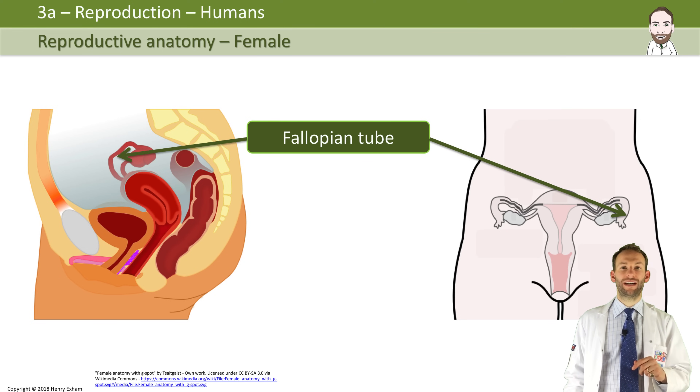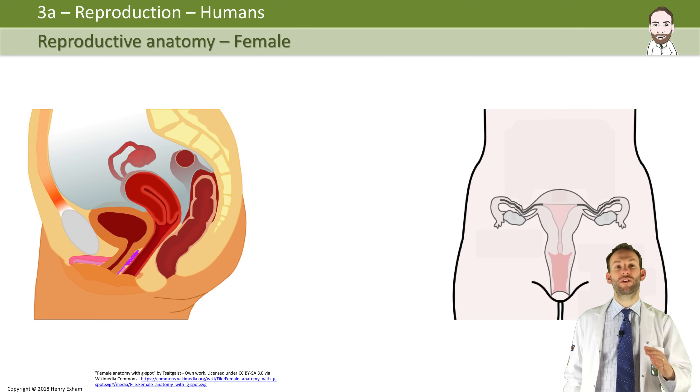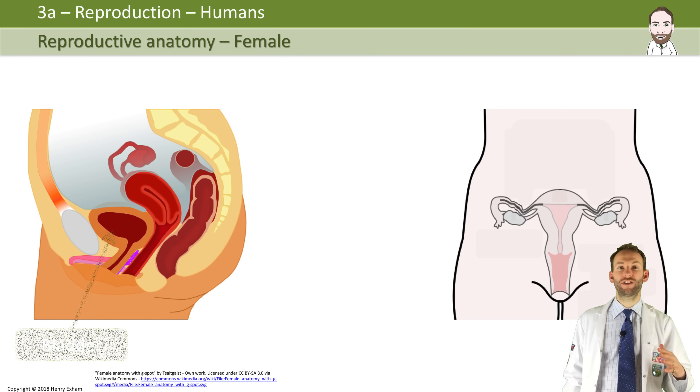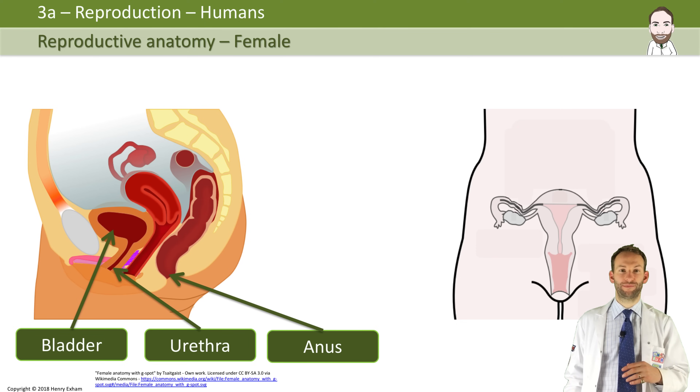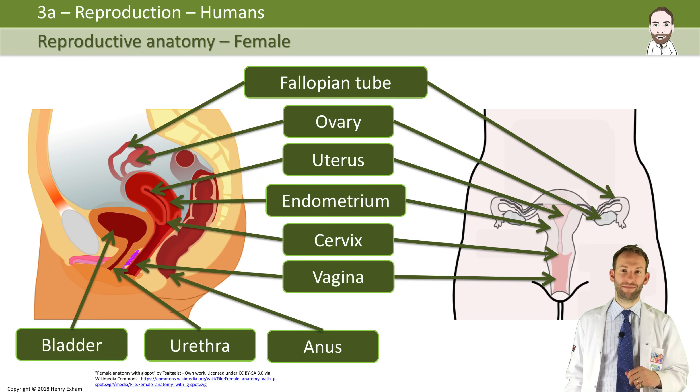The female also has a urethral opening in front of the vagina and the anus behind the vagina. So that covers the female anatomy.